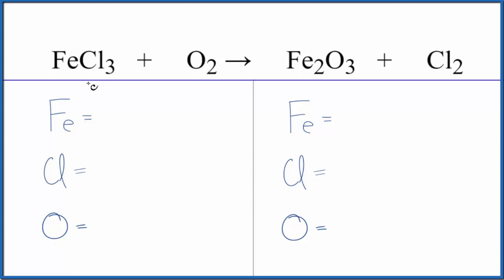Essentially, we have this solid iron 3 chloride and the oxygen gas in a combustion reaction. We get iron 3 oxide and chlorine gas.